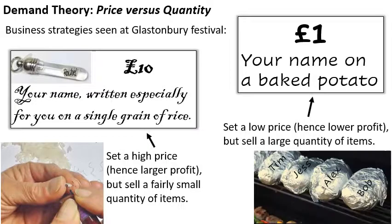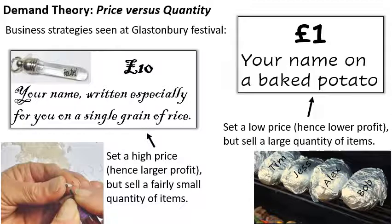On the other hand, your name on a baked potato has a low price so the profit won't be so large, but you will sell a larger quantity — so you might make more money in the long run by selling lots of things than just a few. If you make it too cheap, you won't make any profit at all. If you make it too expensive, you won't sell any at all. There's got to be a sweet spot somewhere in the middle and that's what we're going to be looking into.